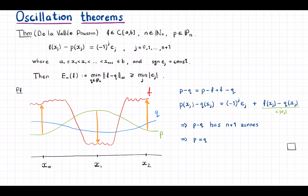It states that given a continuous function f on a closed interval [a,b] and given an nth degree polynomial p, suppose that the difference f minus p changes its sign n plus one times — that is, there are n plus two points x₀ through x_{n+1} at which this difference alternates its sign. In this picture, the red curve is f and the green curve is the polynomial p, with n plus two points such that the difference alternates sign: positive here, negative here, positive, and so on.